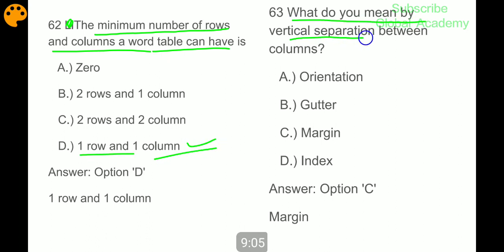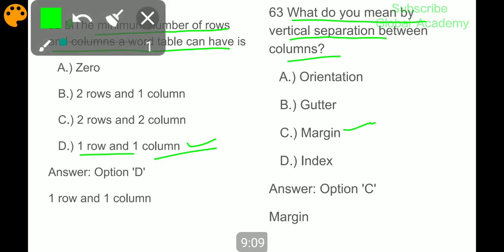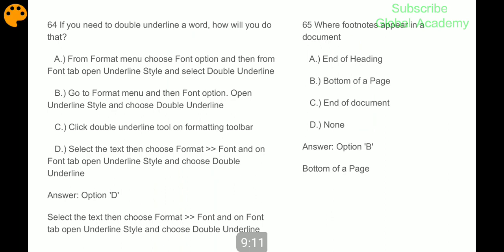What do you mean by vertical separation between columns? Margin. If you need to double underline a word, select the text then choose Format Font, and on font tab open underline style and choose double underline.